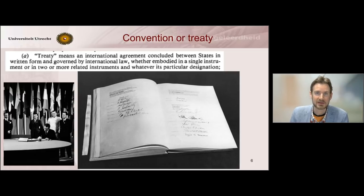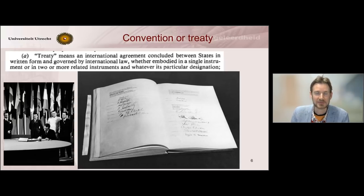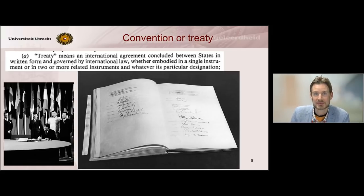Let's look at these sources in turn. We begin with the most important one: conventions or treaties, as they are more commonly referred to. We find a definition of what constitutes a treaty in the Vienna Convention on the Law of Treaties. You find the definition on the slide. There is a special knowledge clip on the law of treaties, so I will refer you to that.